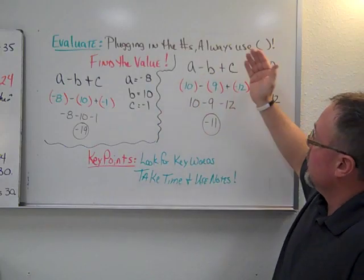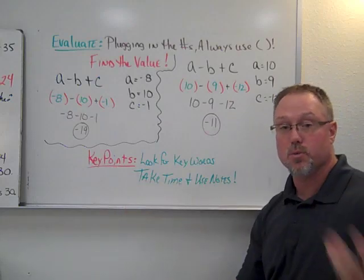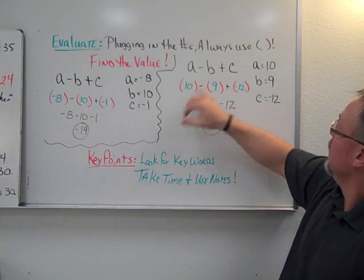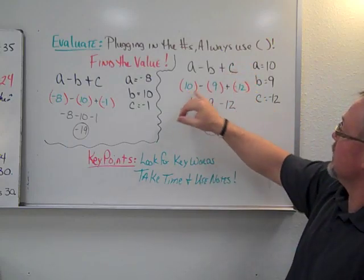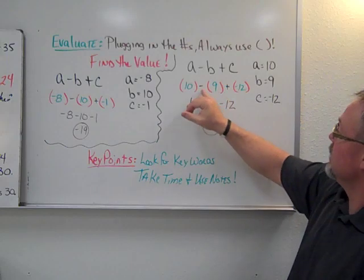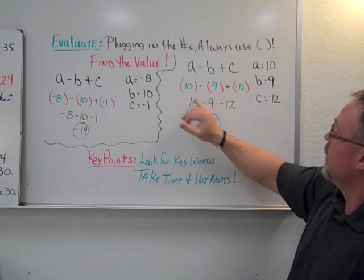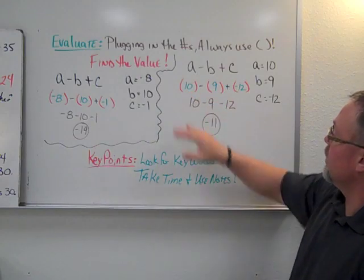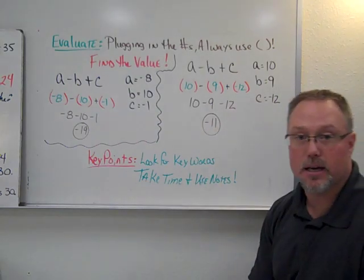In another evaluation example with a minus b plus c, where a equals 10, b equals 9, and c equals 12 — simplify the signs again. An odd number of negatives gives a negative, so we get 10, negative 9, negative 12. Combining those from left to right gives us negative 11.